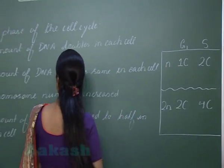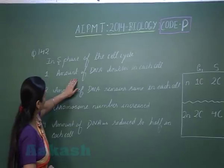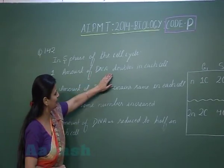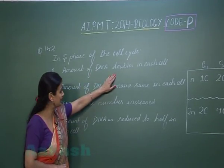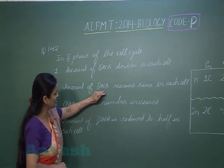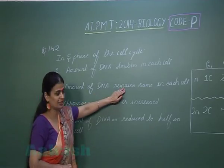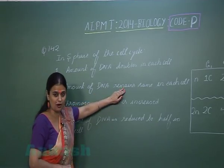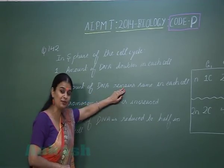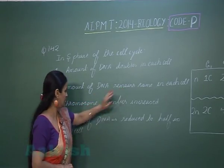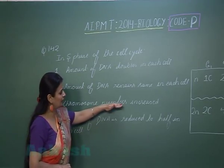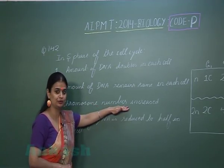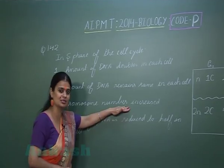Now we can look for the right option. Option: Amount of DNA doubles — this is correct. Option: Amount of DNA remains same — wrong. Option: Number of chromosomes remains same — correct. Option: Chromosome number increased — no.